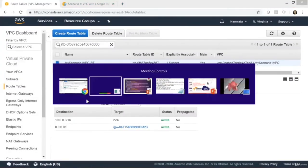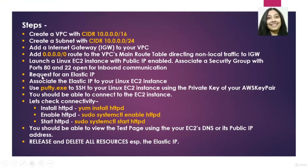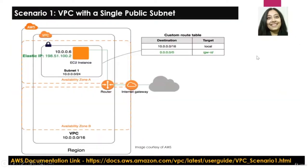We have completed the first four steps: created the VPC, created the subnet, created the internet gateway, and added the non-local route to our route table directing traffic to the internet gateway. We've created this VPC, this subnet, added the internet gateway, and added the custom route — the non-local traffic — directing it to our internet gateway.